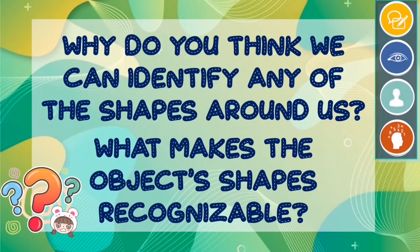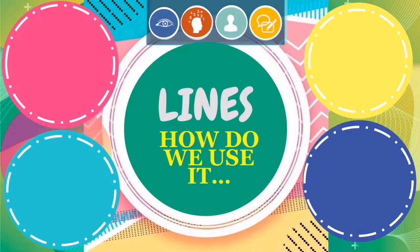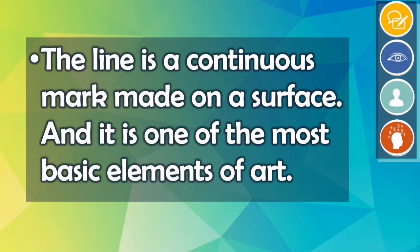That's correct! Shapes around us are made from lines, or connected by lines. That makes it recognizable. But what are lines? How are they made or being used? Write your answers! Remember, the line is a continuous mark made on a surface. It is one of the most basic elements of art.